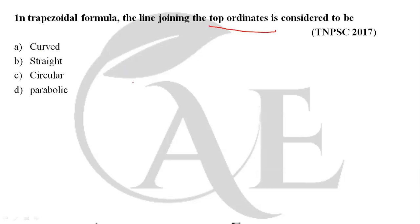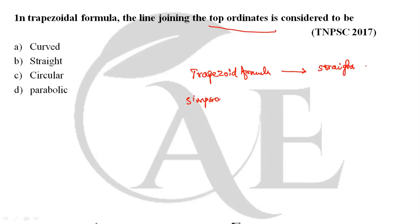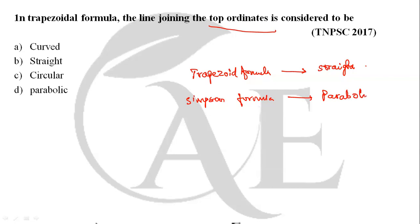Next question: in the trapezoidal formula, the line joining the top of the ordinates is considered to be straight. In Simpson's formula, the line joining the ordinates is considered parabolic. So for the trapezoidal rule, the correct answer is option B — straight.